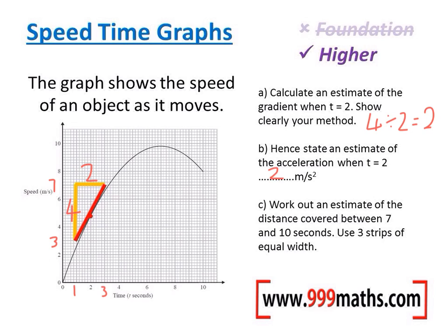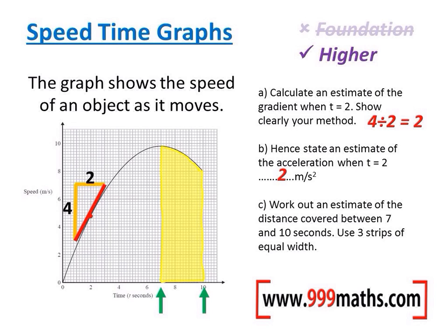Part C wants us to work out an estimate of how far the object moved between 7 and 10 seconds. The area under the graph tells you how far it's moved. It only wants me to look at the graph between 7 and 10 seconds, so let's look at that area in particular — between 7 and 10 at the bottom. Let's shade that in.